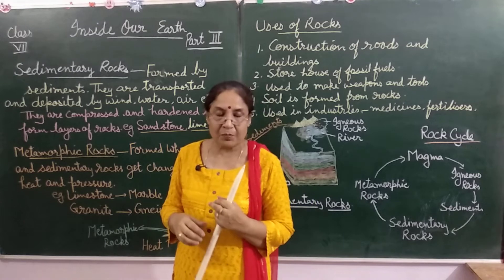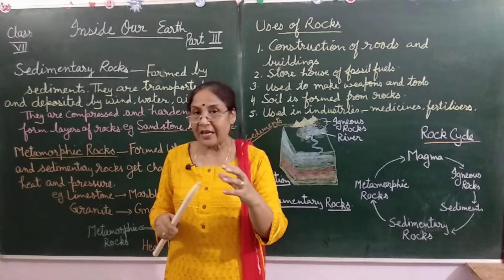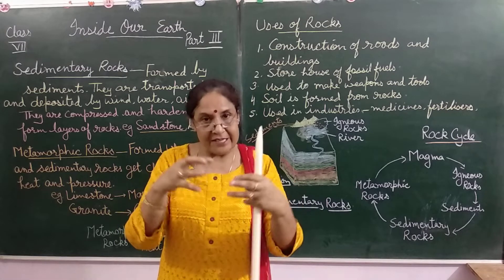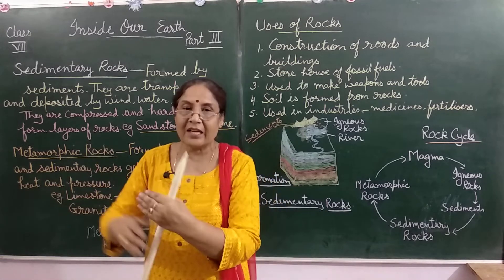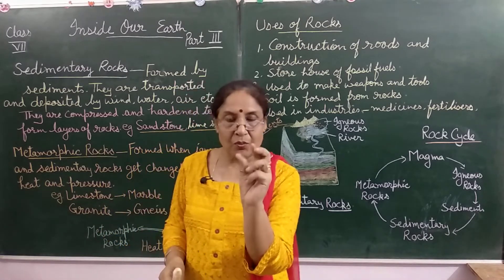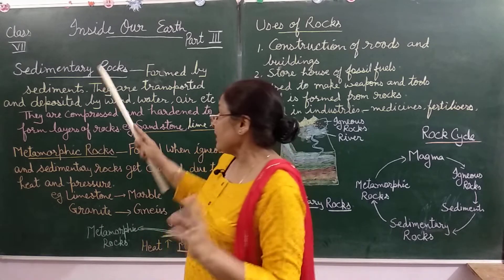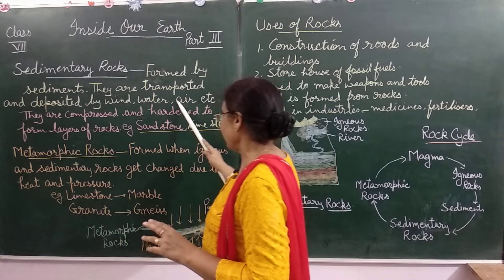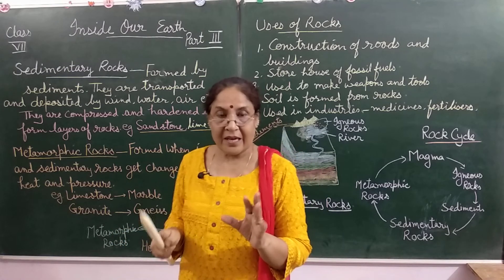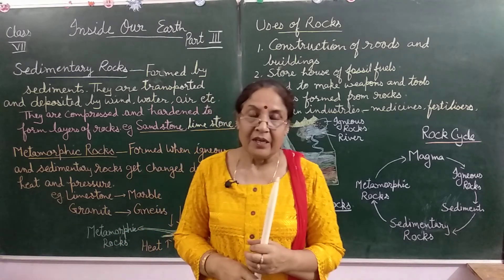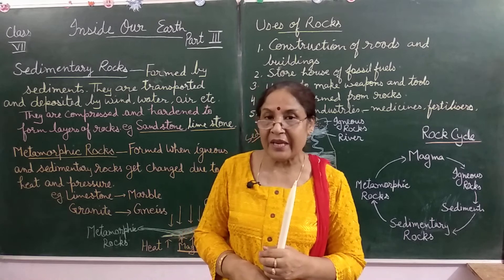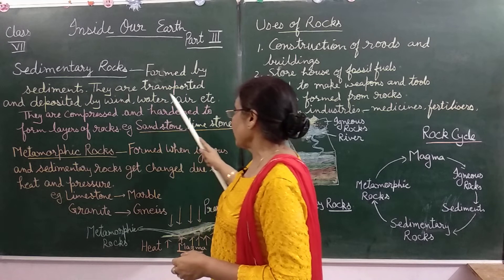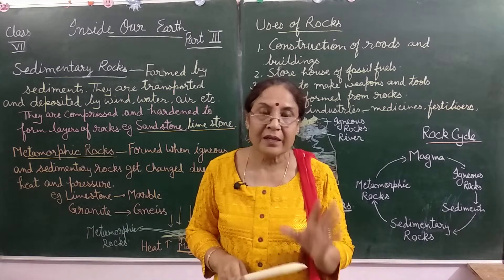Weathering is a continuous process. Rocks break down by rolling and hitting each other, converting into small sediments. These sediments are transported and deposited by wind, water, air, and glaciers — this process is called erosion. Erosion means the wearing away of land by wind, water, and air.